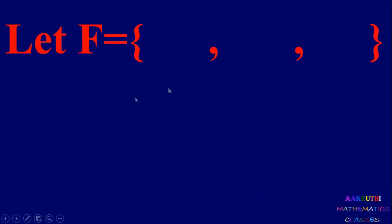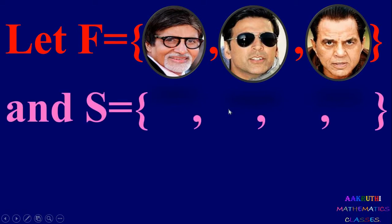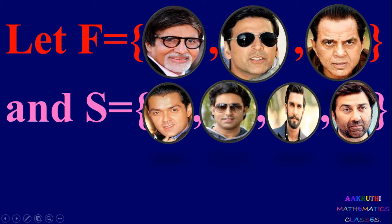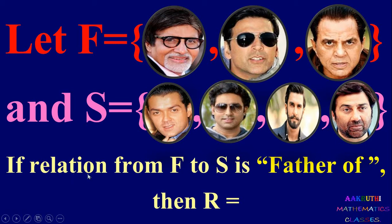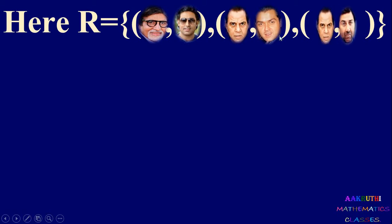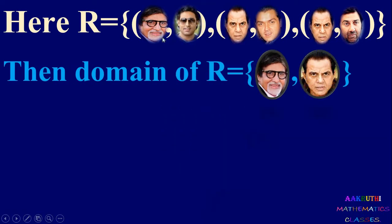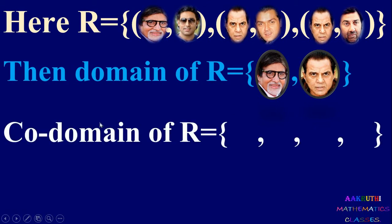Consider set F with Amitabh Bachan, Akshay Kumar and Dharmendra, and set S with Bobby Deyol, Abhishek Bachan, Ranbir Singh and Sunny Deyol. Consider a relation from F to S defined as 'is father of'. Amitabh Bachan is father of Abhishek Bachan, and Dharmendra is father of Bobby Deyol and also father of Sunny Deyol. So relation R = {(Amitabh Bachan, Abhishek Bachan), (Dharmendra, Bobby Deyol), (Dharmendra, Sunny Deyol)}.